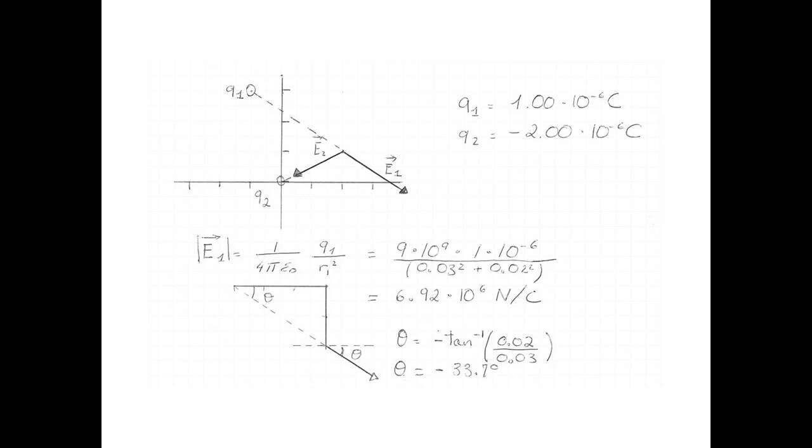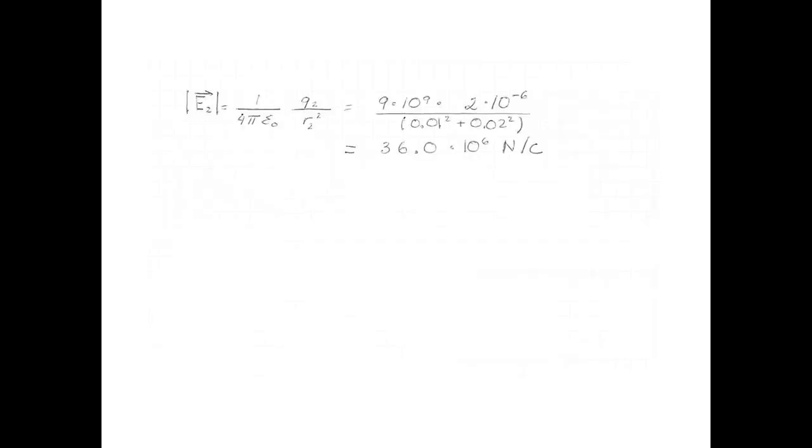Next, let's get the magnitude of our second electric field. Once again, using the formula for point charges, the magnitude of the second electric field is 9 times 10 to the 9, times 2 microcoulombs, divided by 0.01 squared plus 0.02 squared. That makes the magnitude of the vector 36 times 10 to the 6 newtons per coulomb.